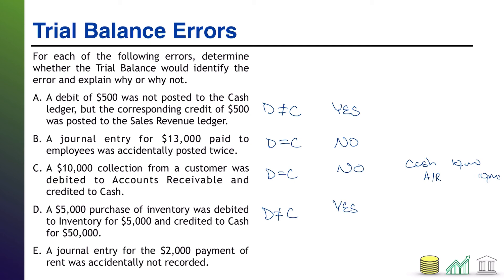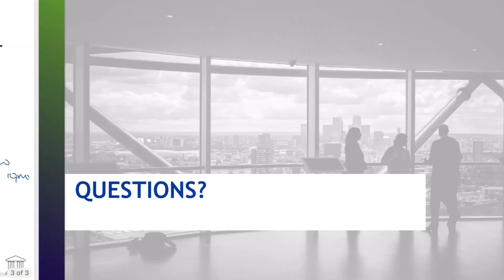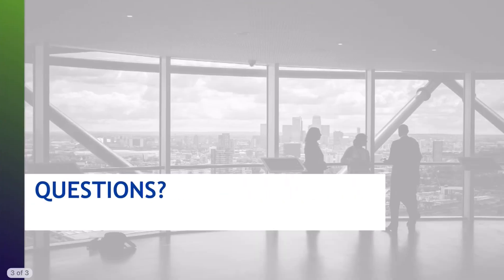Error E: a journal entry for the $2,000 payment of rent was accidentally not recorded at all. Leaving a journal entry out entirely does not change the fact that debits and credits equal each other — the debits will be wrong, the credits will be wrong, but they will be equally wrong. Debits and credits still equal each other, so no, the trial balance would not capture that. That's it for trial balance errors — hope you found it helpful!